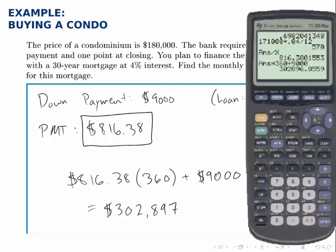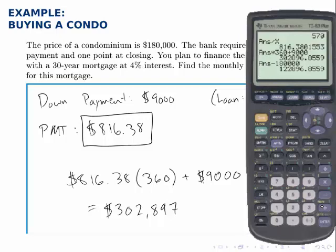Since the price of the condo was $180,000, the difference between $180,000 and what I've actually paid is all the interest. Subtracting the cost of the condo, I find that over the life of this loan I pay nearly $123,000 in interest. That's a significant amount, consistent with mortgages in general — the loans are long enough that interest payments add up considerably. The question just asks for the monthly payment, but once we have that, we can do other calculations like this one to evaluate whether the loan is a good idea.